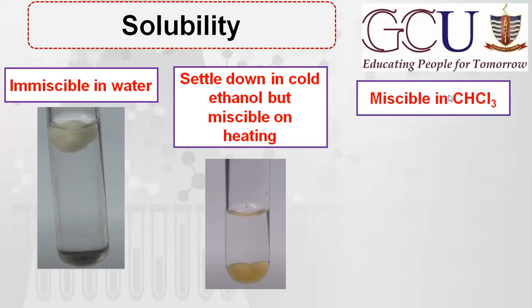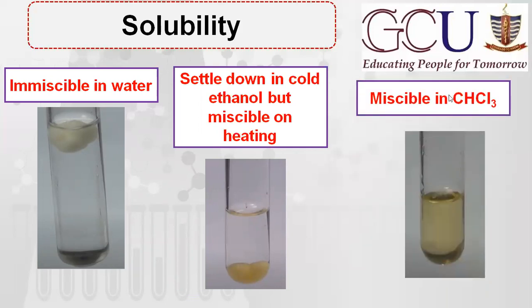The third solubility test is with chloroform — lipids are completely miscible in chloroform. By checking solubility in these three solvents, you can determine whether a substance is a lipid: upper layer in water, lower layer in cold ethanol, and completely miscible in chloroform.